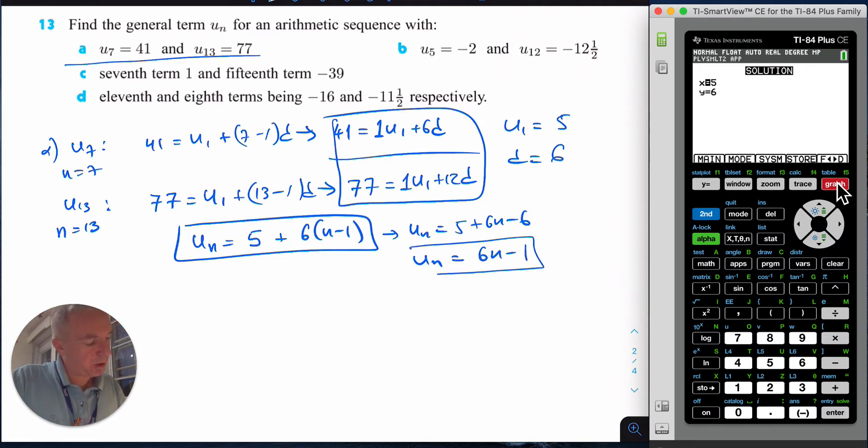Let's do part b. Same thing: for u5 where n equals 5, I get -2 = u1 + 4d. For u12 where n equals 12, I'm going to get -12.5 = u1 + 11d.